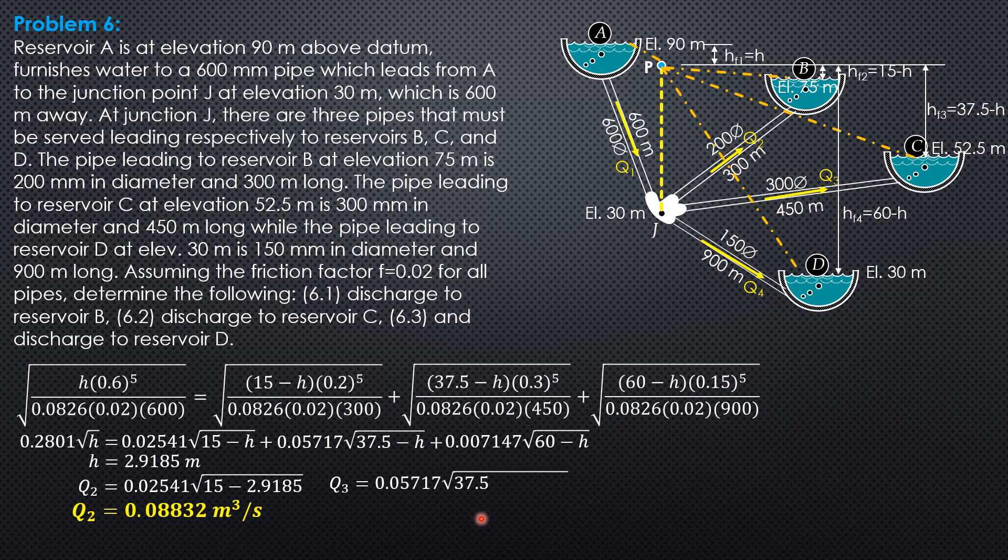Q3 is 0.05717 square root of 37.5 minus 2.9185, which equals 0.3362 cubic meter per second.